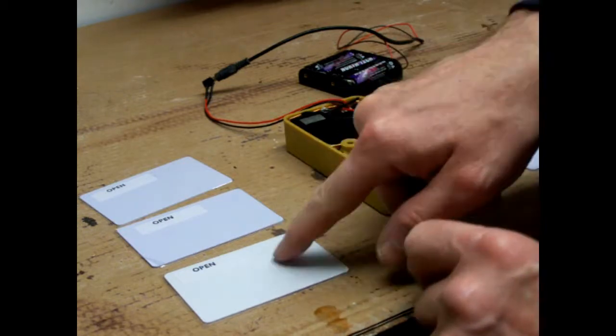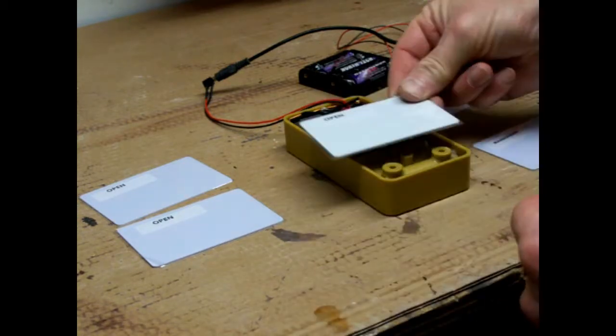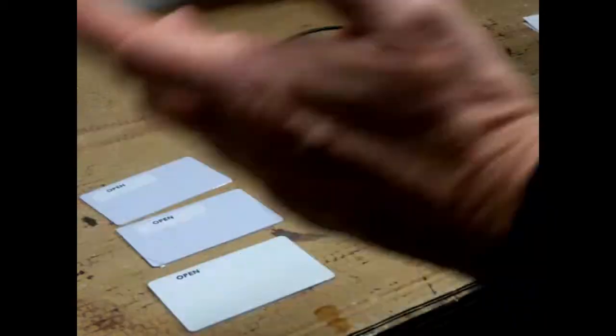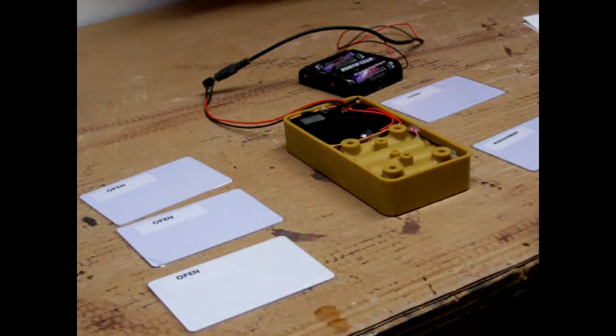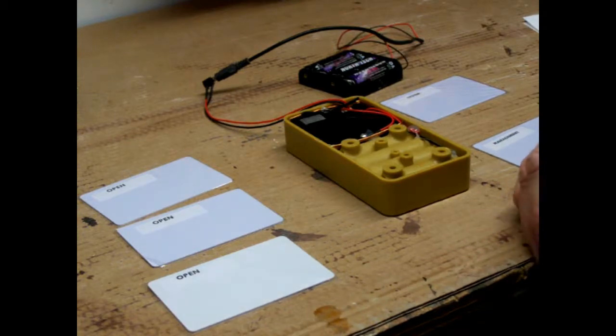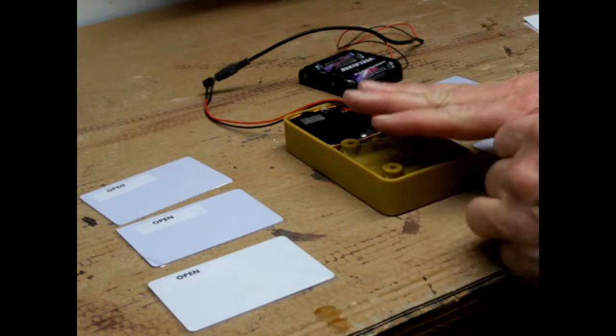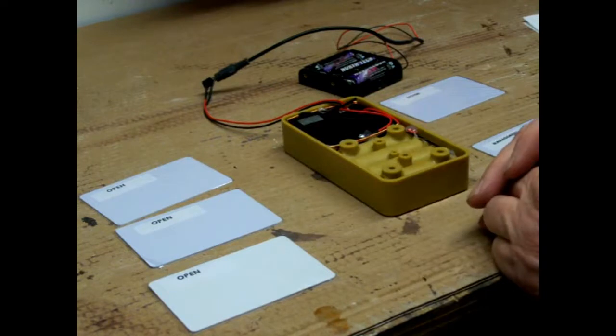Okay. Now this third lock should be available. So I should be able to scan it, and it works well. And that's how you program your RFID cards into your RFID lock.